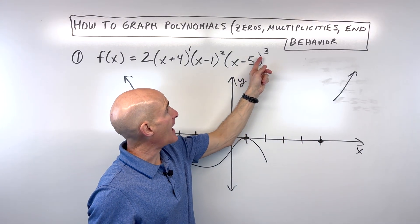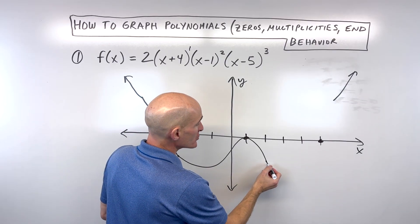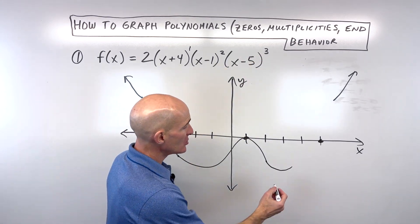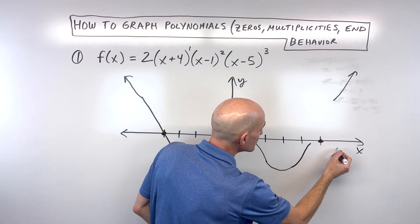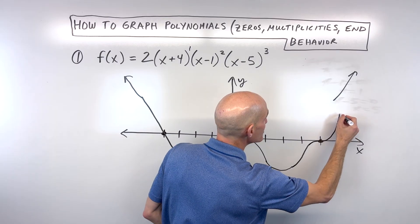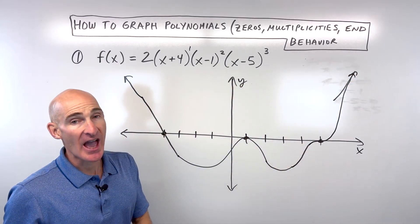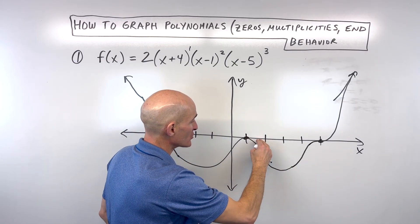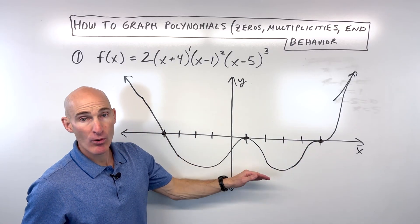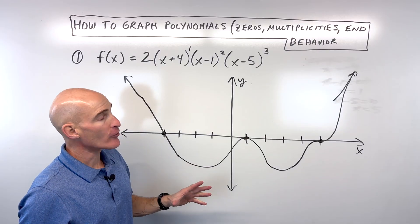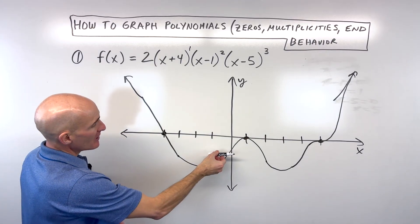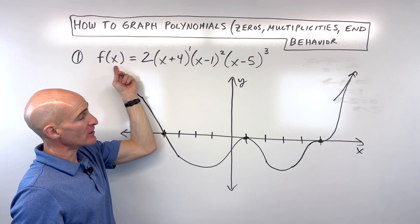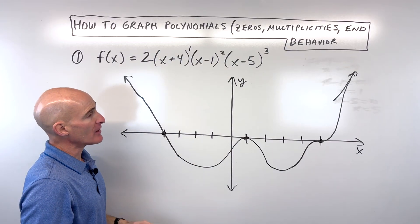Over here at x equals 5, we have an odd multiplicity, which tells us it's going to go through. If you want to get a little fancier, think about what x cubed looks like — it's almost going to bend and kind of bounce, but then it goes through, bending the other direction. This is just a sketch. When you get to calculus, you'll learn how to find exactly how far the graph goes — those are the extreme points or extrema. For right now, we're just trying to get a rough sketch. You can also find the y-intercept by putting zero in for x.